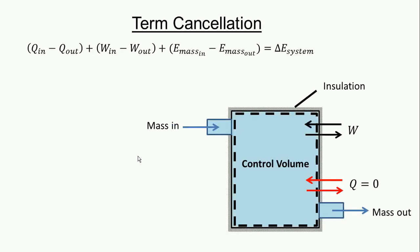Now that we know the basic terms that go into an open system, we'll see how these terms come into play and how you can simplify your analysis to describe an open system. The figure shows a control volume, or an open system, surrounded by insulation.